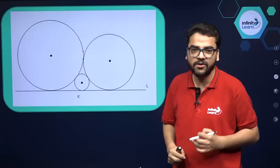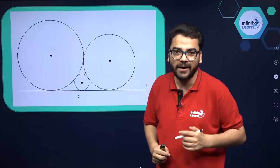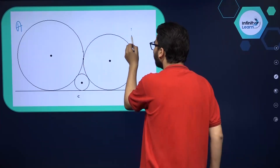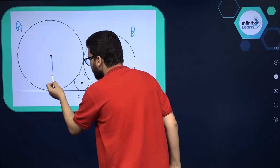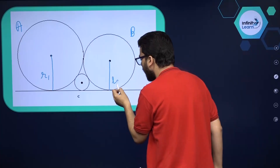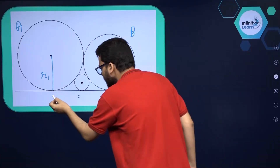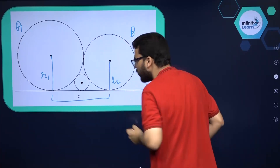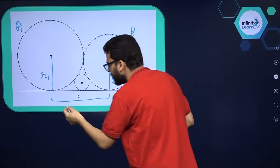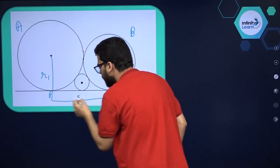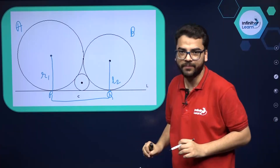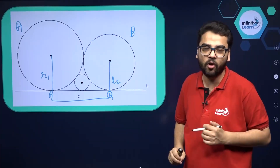To understand this, you need to know what a direct common tangent is. Suppose this is circle A and this is circle B, with radius R1 and R2 respectively. The length of the direct common tangent between them is PQ. So PQ is the direct common tangent between circles A and B, and we want to find its length.